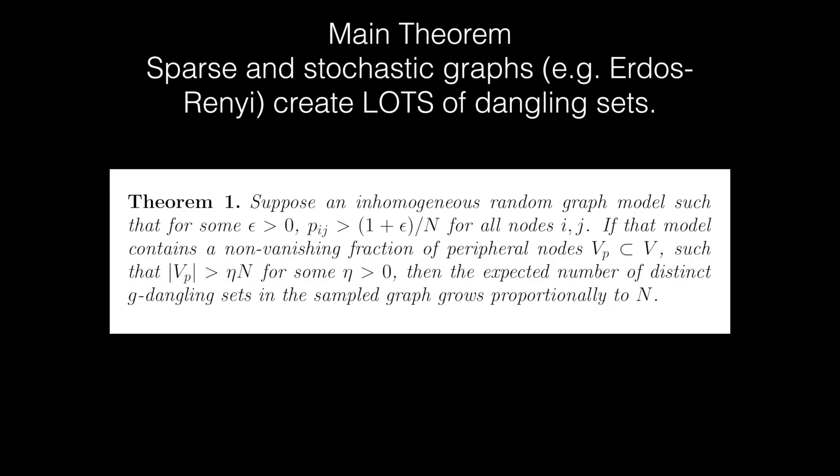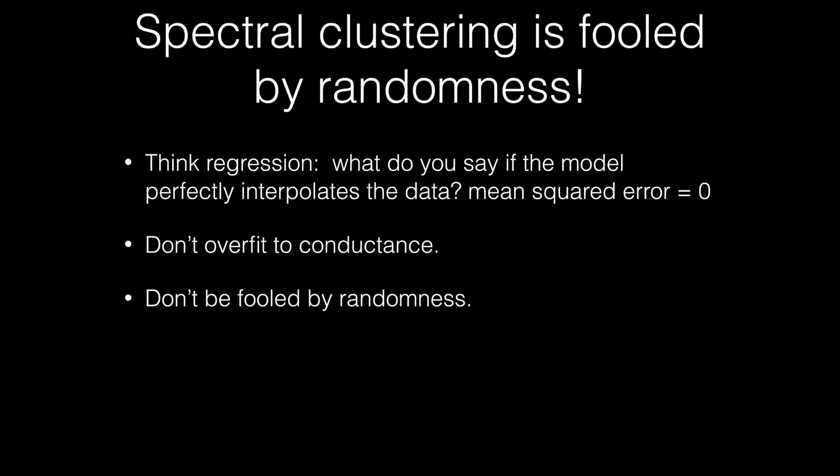And the big problem is that these sets are created as an artifact of noise. In sparse and stochastic graphs, like Erdos-Reni, there are loads and loads of them. Think about what would happen in regression. What would you say if the model perfectly interpolated the data with a mean squared error of zero? You'd say that that's overfitting. And what Spectral Clustering does is it overfits to conductance. Don't be fooled by that randomness.